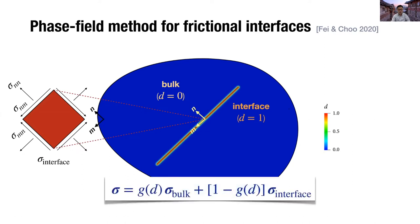Then, we can calculate the overall stress tensor as a weighted average of the stress in the bulk region, sigma bulk, and the interface stress with the weights calculated from the degradation function denoted by g(d).